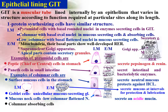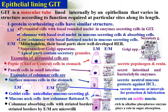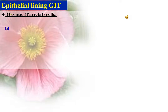Other columnar cells are columnar absorbing cells. They are columnar with basal oval nuclei; their free borders are striated and rich in alkaline phosphatase, which plays a role in sugar absorption. By electron microscope, the striated border is found to be formed of microvilli, which increase the surface area for absorption. They have well-developed Golgi apparatus, mitochondria, and rough endoplasmic reticulum, as well as free ribosomes, as in other protein-secreting cells.